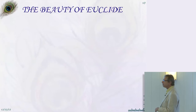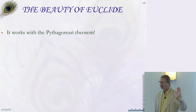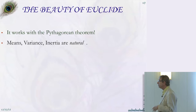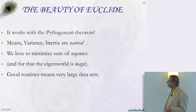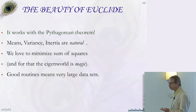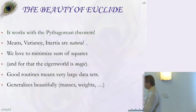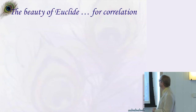The Euclidean toolbox is great because it works with the Pythagorean theorem — probably the only theorem that everybody knows. Notions like mean, variance, and inertia are completely natural there. For those who love to minimize sum of squares, you have something called the eigenmagic. It lets us analyze huge datasets and generalizes beautifully — you can add masses and weights, and statisticians can reach paradise when normality and IID conditions hold.